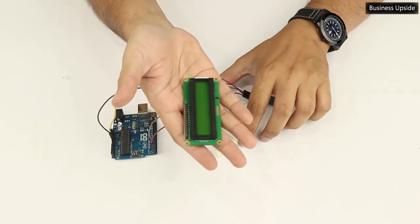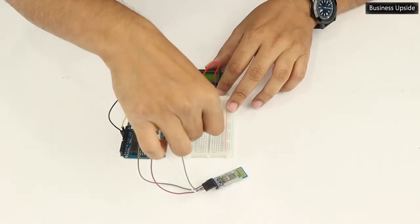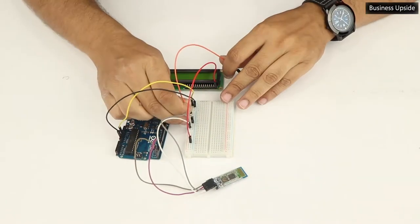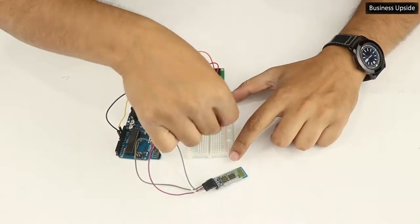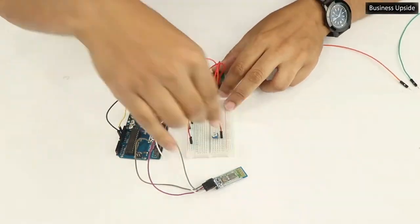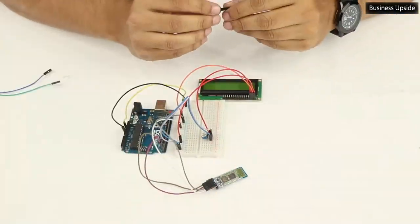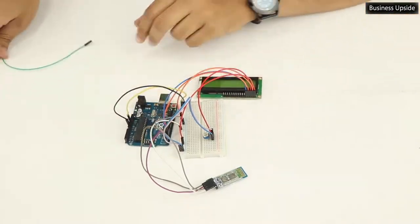Let's connect the LCD to the Arduino. PIN1 to ground, PIN2 to positive supply, PIN3 to middle pin of variable resistor. Connect pin 1 of VR to positive and pin 3 of VR to ground.